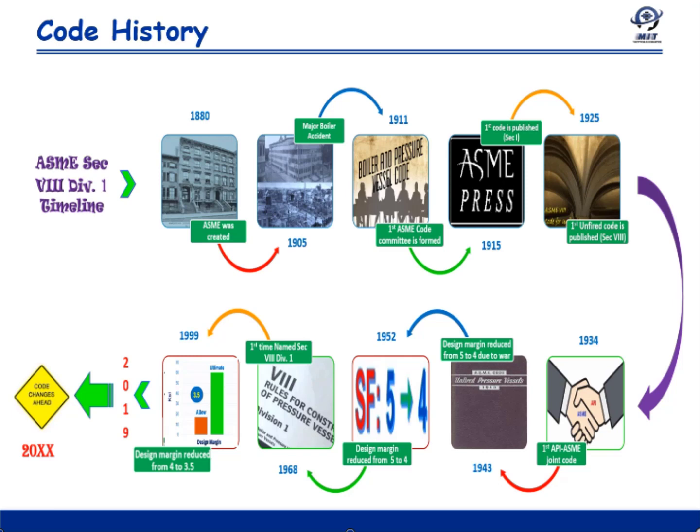1983 was the first year when the ASME Code was issued in both conventional and metric units. The first Division 3, related to the High Pressure Vessel Code, was published in the year 1997.